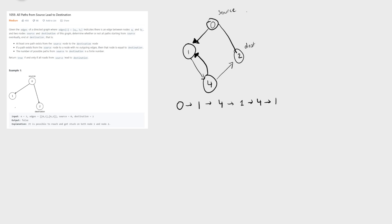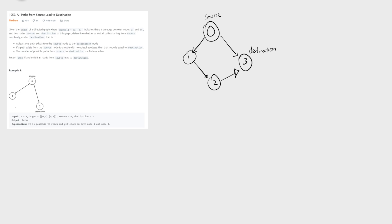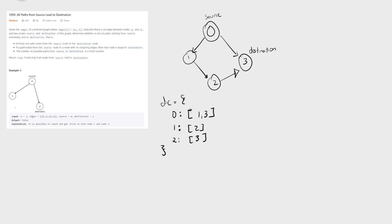We're going to use a dictionary to spot something like this — a seen dictionary to avoid the infinite loop. Given this example where the source is zero and the destination is three, we start by building out the dictionary that represents this graph. Once we iterate all the edges, the dictionary holds the state of the graph. The key is all nodes with outgoing edges and the value is a list of nodes they go to. So zero goes to one and three, one goes to two, and two goes to three.